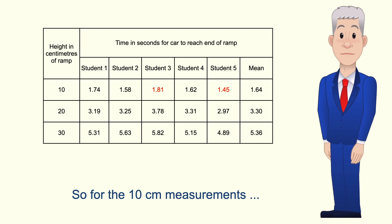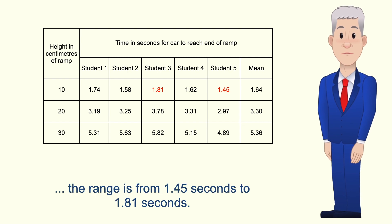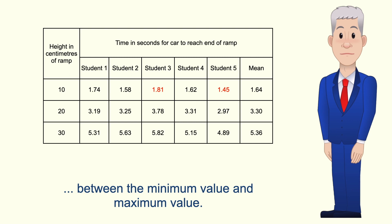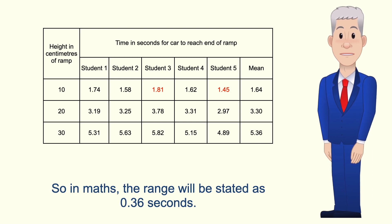So for the 10 centimeter measurements the range is from 1.45 seconds to 1.81 seconds. However in maths the range is the difference between the minimum value and maximum value. So in maths the range would be stated as 0.36 seconds.